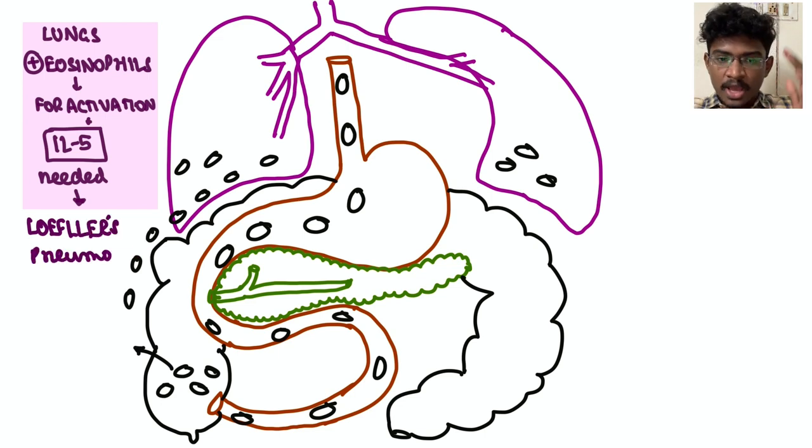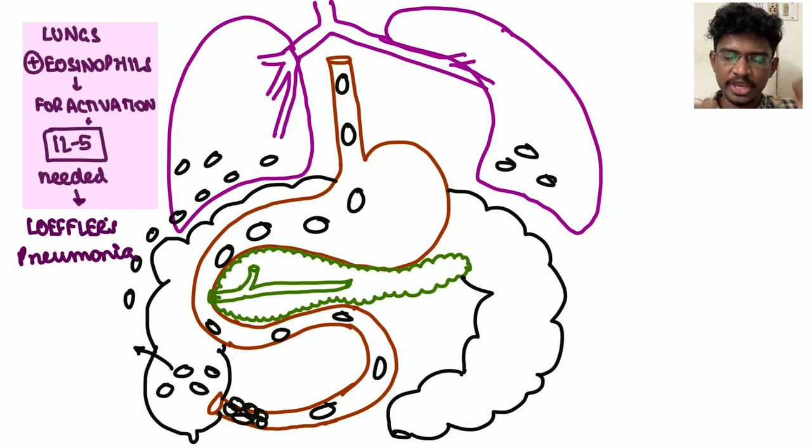After getting activated, the eosinophils will produce pneumonitis, which is the Loeffler's pneumonia, first described in ascariasis. Next, what happens is these worms can obstruct the terminal ileum causing ileal obstruction, intestinal obstruction, resulting in vomiting, nausea, colicky abdominal pain, all these things. And multiple air-fluid levels in X-ray also serve as sign of obstruction.